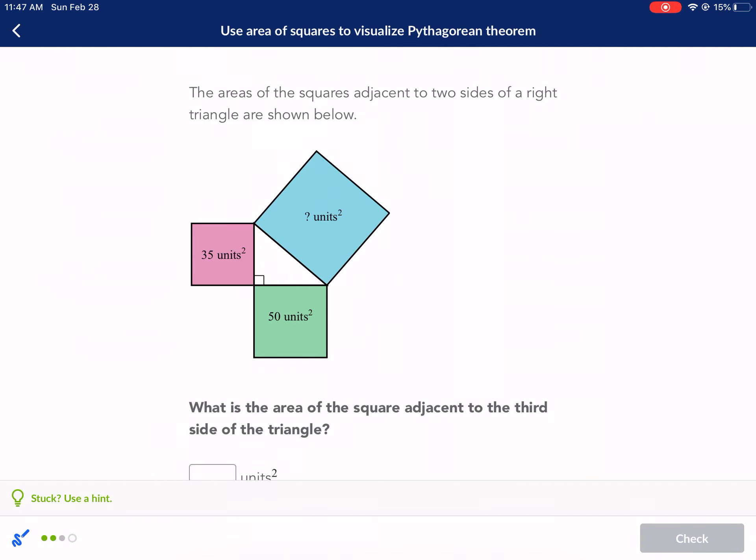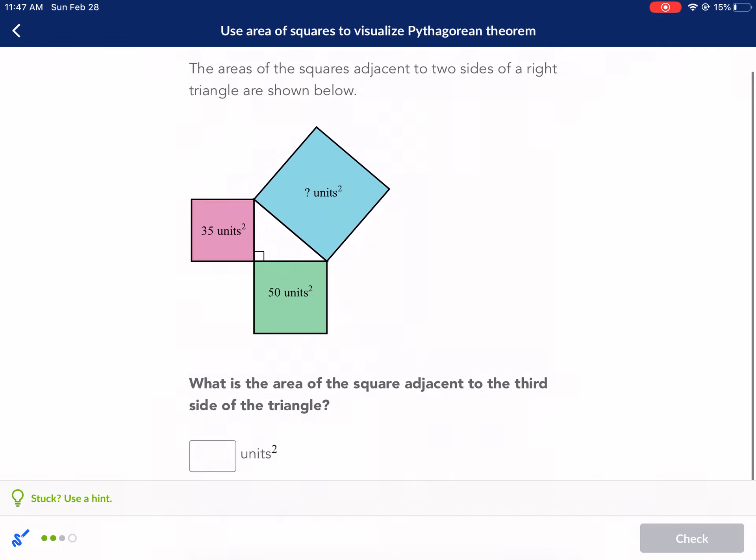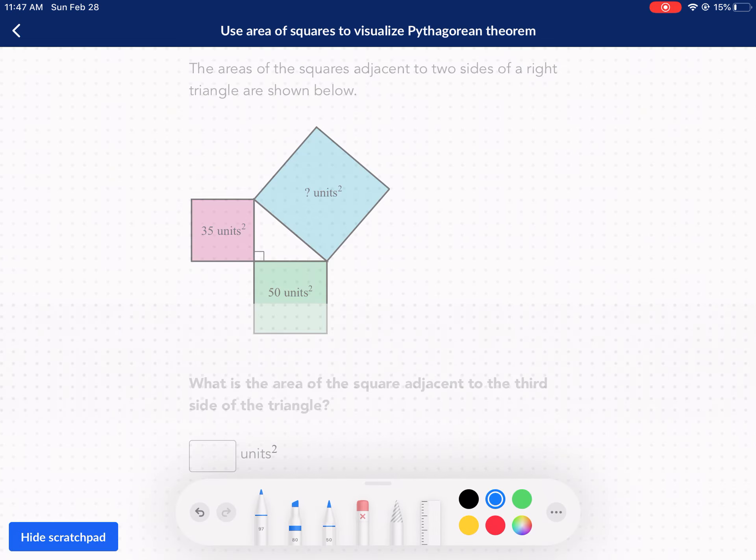The areas of the squares adjacent to two sides of a right triangle are shown below. What is the area of the square adjacent to the third side? Essentially we just need to add these two together. A squared plus B squared equals C squared.